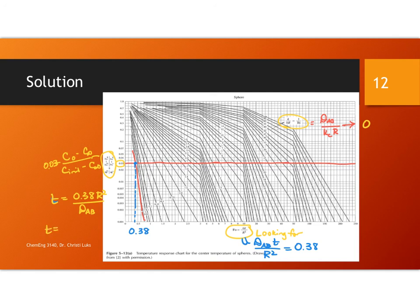T is going to equal 0.38 times R squared over the diffusivity. I'm using R equal to 0.003 meters. I'm using diffusivity of 1.8 times 10 to the minus 10th meter squared per second. And I end up with a time of 19,000 seconds. Or if I put this into something that's on a scale that I know what it means, that's about five and a quarter hours.